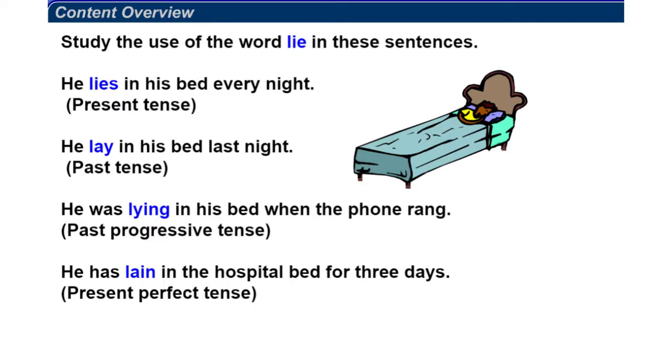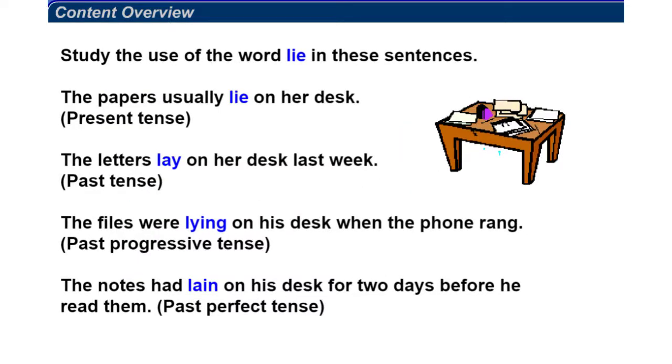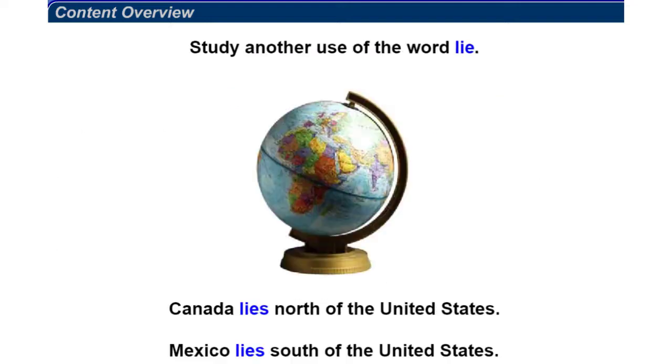He has lain in the hospital bed for three days - that's present perfect tense. The papers usually lie on her desk - present tense. The letters lay on her desk last week - past tense. The files were lying on his desk when the phone rang - past progressive tense. The notes had lain on his desk for two days before he read them - past perfect tense.